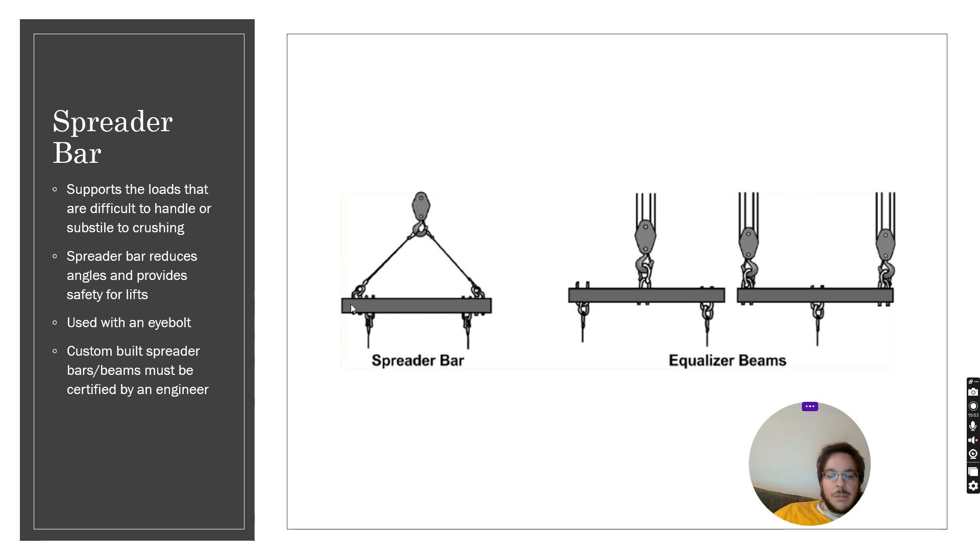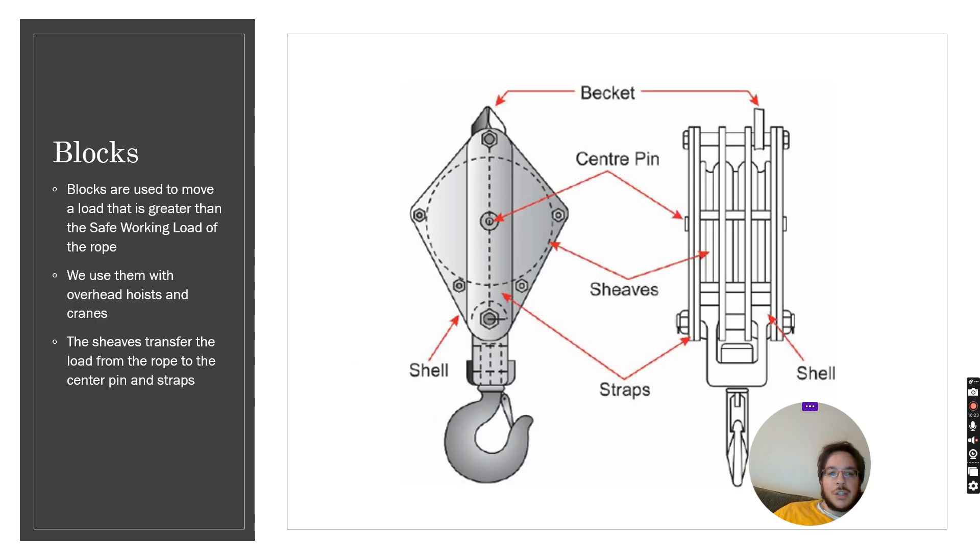Sometimes when we have a load that's susceptible to crushing or difficult to handle then we want to use a spreader bar. The spreader bar has now reduced our angle by a significant amount so we no longer need to use a stronger or higher rated lifting equipment. Now if you get this from the factory a spreader bar it'll tell you what it's rated for but if you do a custom spreader bar then you must have it certified by an engineer.